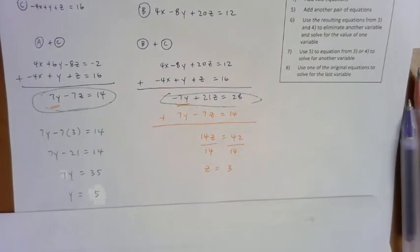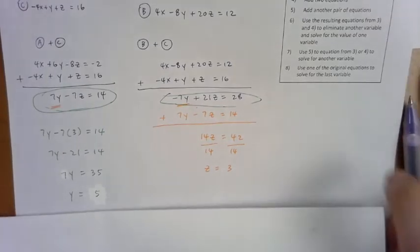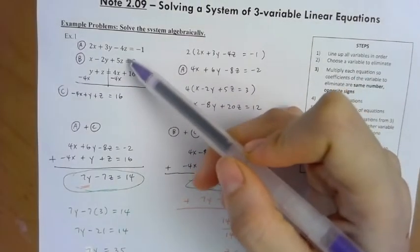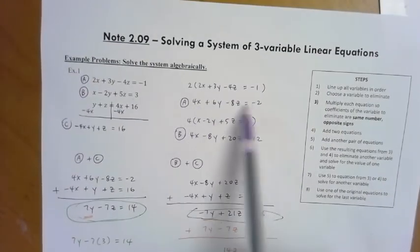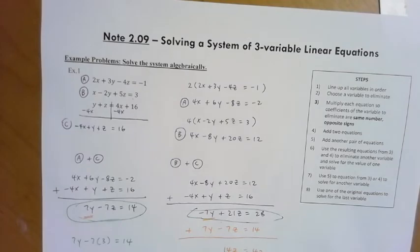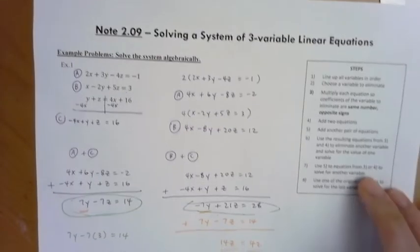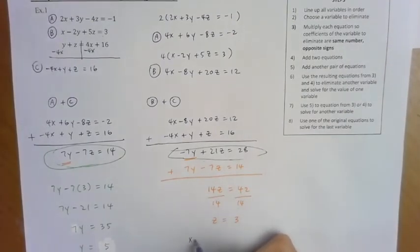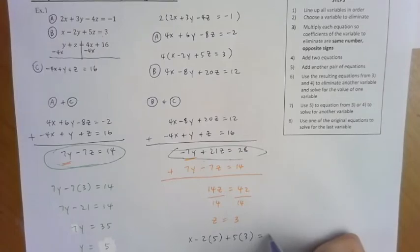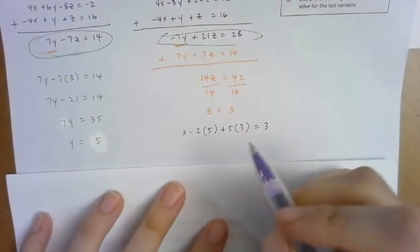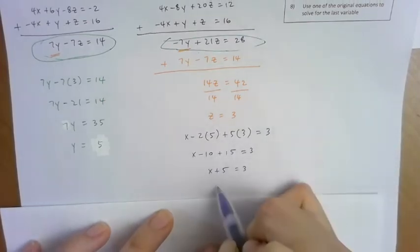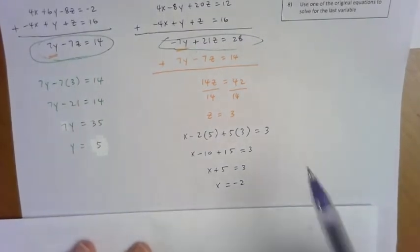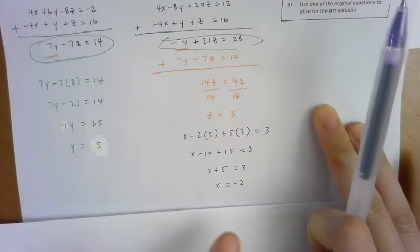All right so then now that I have figured out y and z, I can now choose any of the original equations to find the value of x. I'm going to choose the second one and also scholars you can use any of these as well. Okay they're basically the same equation but I just have bigger numbers and I prefer the ones without the least number of coefficients. y is 5, z is 3 equals 3. Let me just make some room. Okay x plus 5 equals 3. Subtract 5 on both sides. I have x equals negative 2.